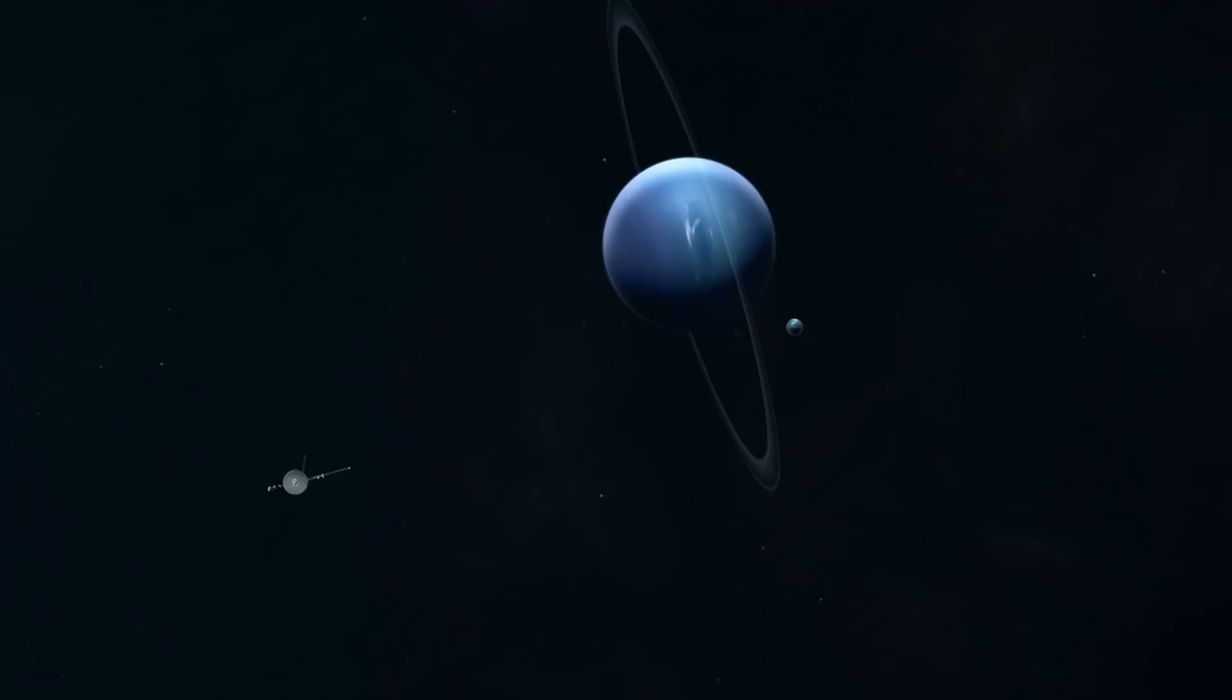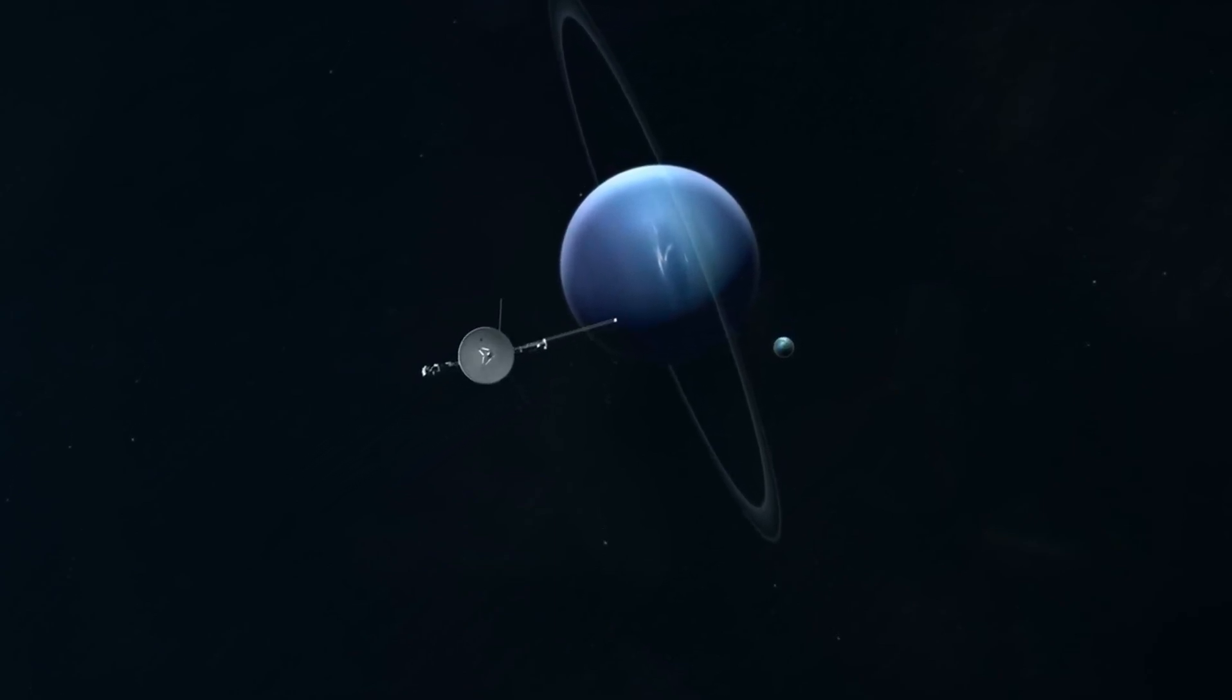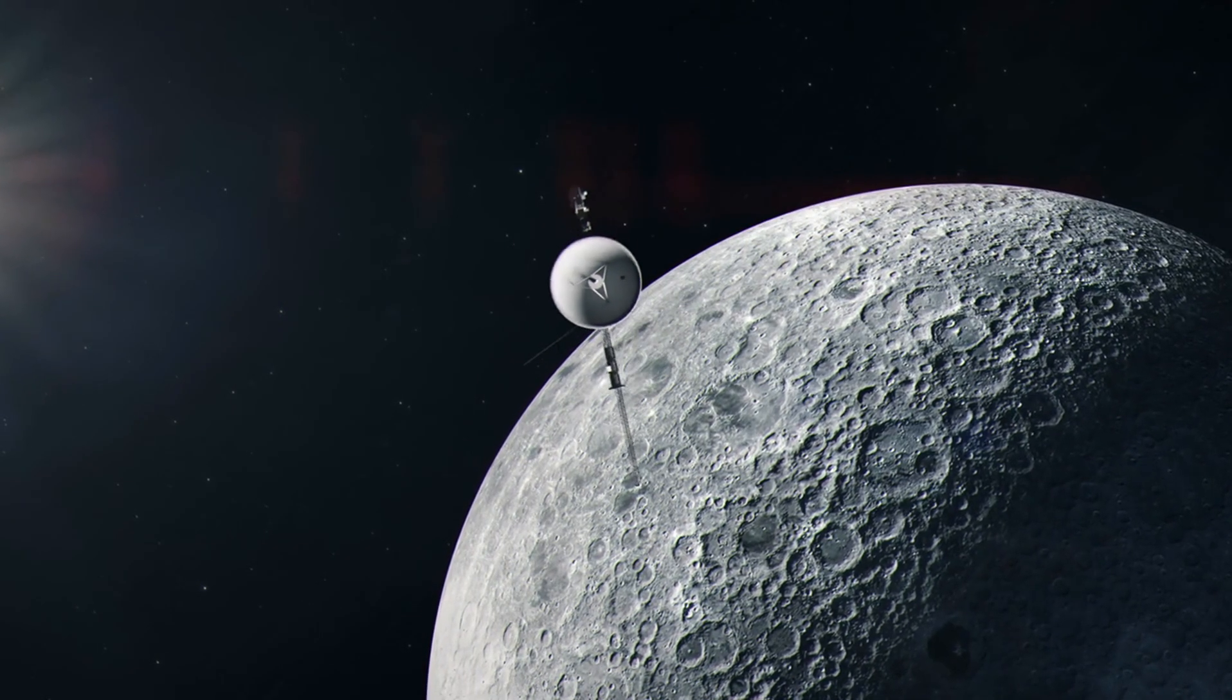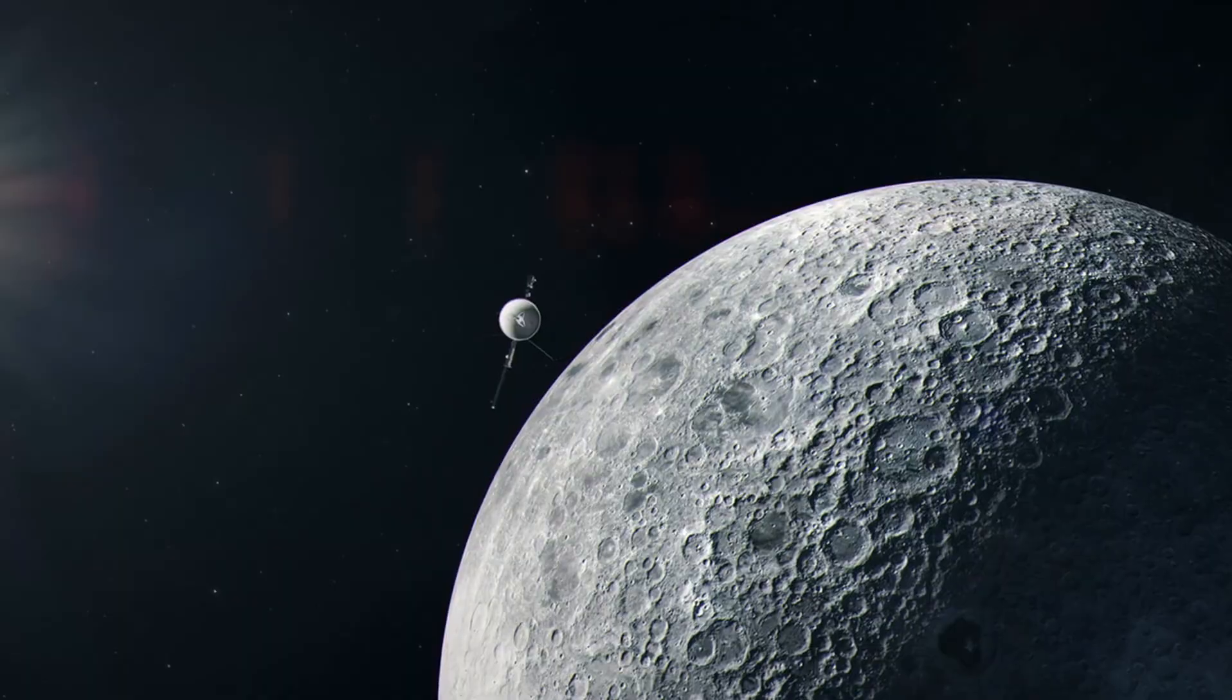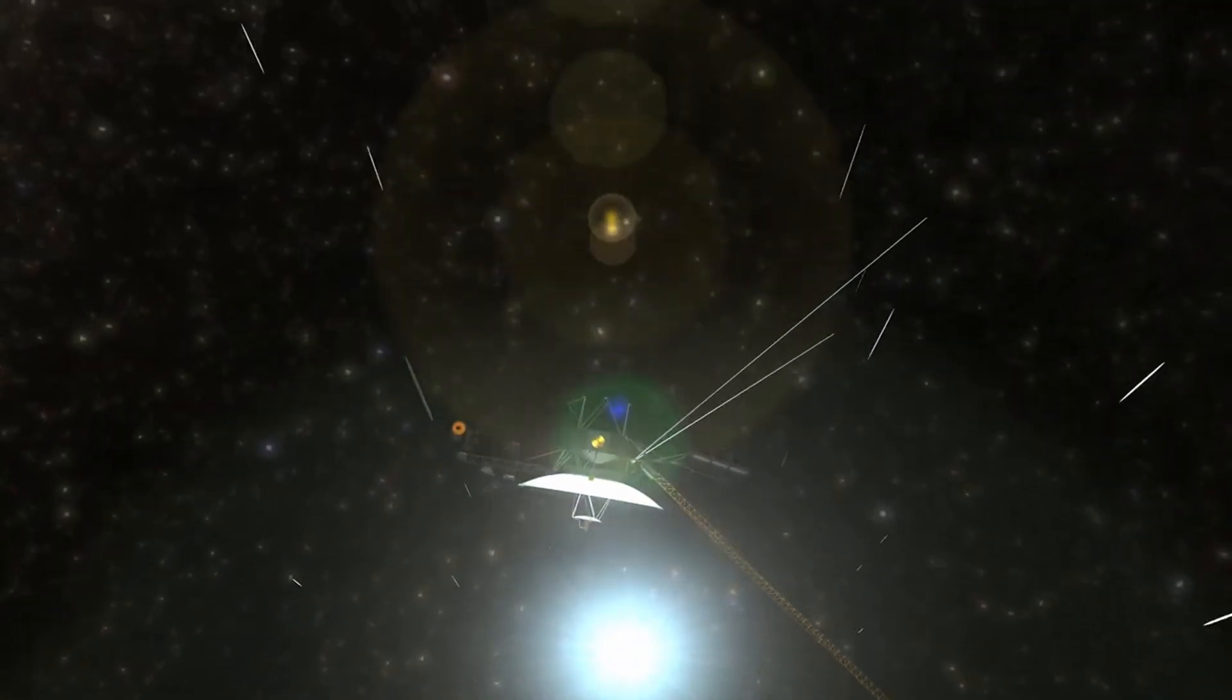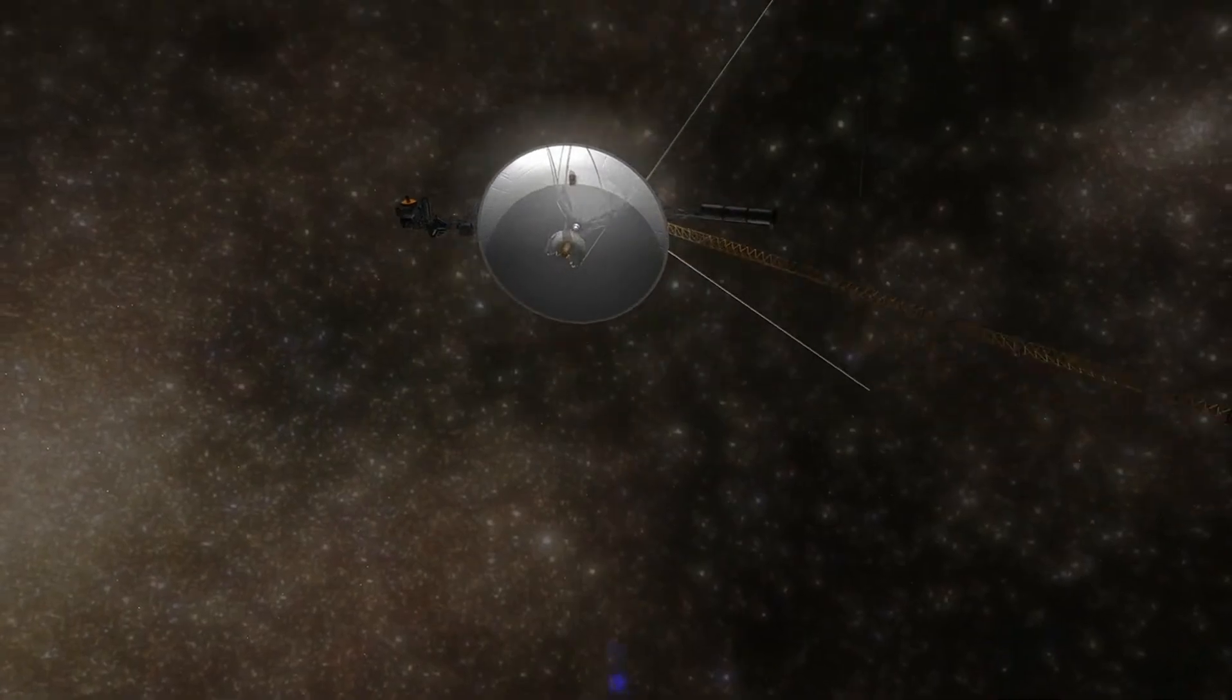The team initially isolated the code responsible for handling the spacecraft's engineering data and relocated it to a new location in the FDS memory on April 18. As mentioned earlier, it takes about 22.5 hours for a radio signal to travel to Voyager 1 and another 22.5 hours for a signal to return.